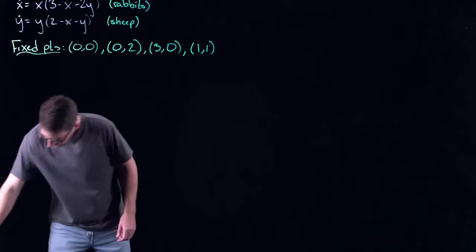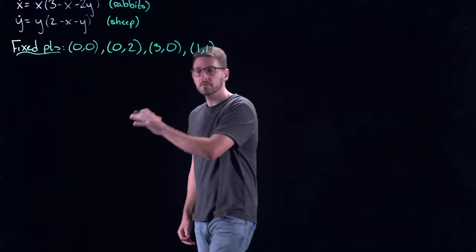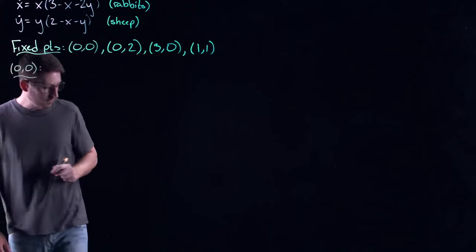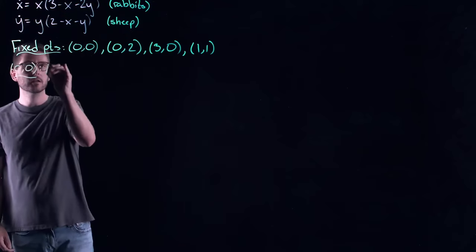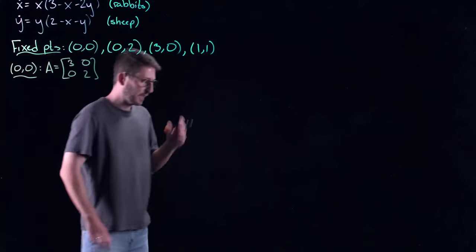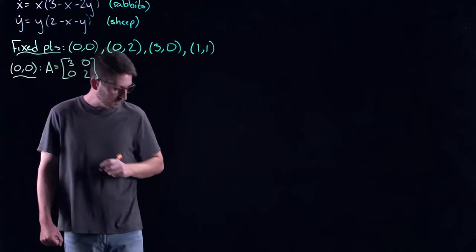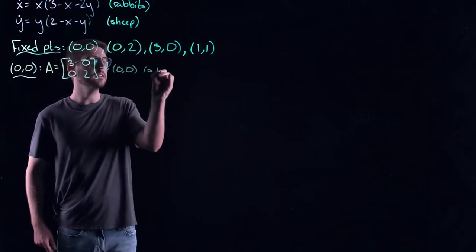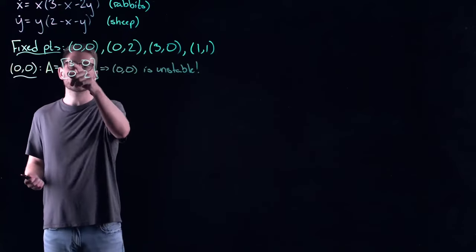Now that we have all these fixed points, we want to do our local linearization — the technique we talked about in the previous video on hyperbolic fixed points. Let's start with (0, 0). The Jacobian matrix evaluated at this fixed point takes the form of a diagonal matrix: 3, 0, 0, 2. This has eigenvalues 3 and 2, which implies (0, 0) is unstable — both eigenvalues have positive real part.